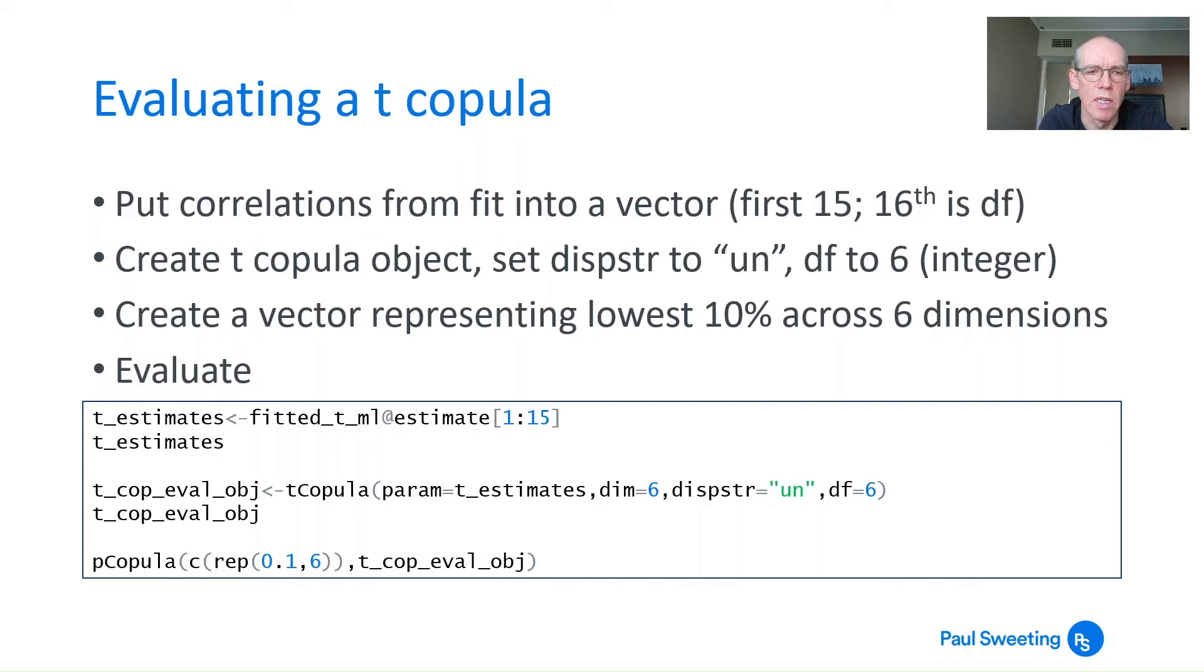Then I created a copula evaluation object using t copula, which I called t_cop_eval_obj - not very interesting names, but descriptive. Into this, we put parameters from the t_estimates vector, six dimensions, unstructured dispersion structure, and degrees of freedom equals six. Then we can look at what t_cop_eval_object looks like by typing it out.